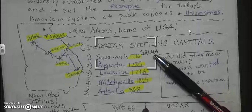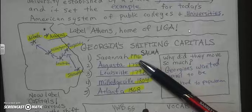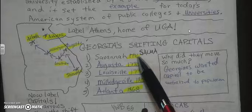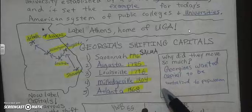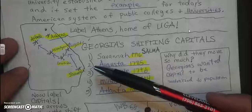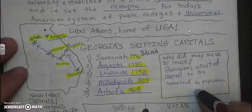Then we talked about the different capitals of Georgia. There were five capitals, and the acronym we remember is SALMA — Savannah, Augusta, Louisville, Milledgeville, and Atlanta. These are the years they became the capital. Savannah: 1776; Augusta: 1785; Louisville: 1796; Milledgeville: 1804; Atlanta: 1868. You do not have to know those dates — you just need to know the order: Savannah, Augusta, Louisville, Milledgeville, Atlanta.